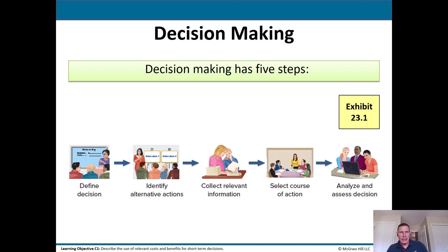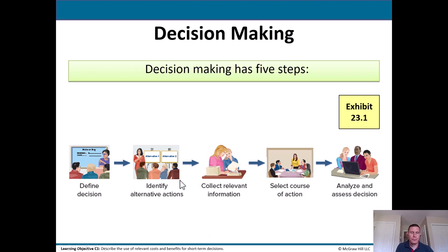Decision making has five steps — these are really nothing different than what you'd use in your personal lives. Define the decision, identify alternative actions, collect relevant information, select a course of action, and finally analyze and assess the decision.